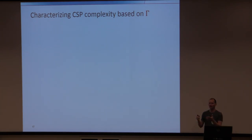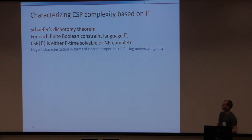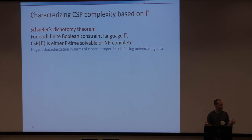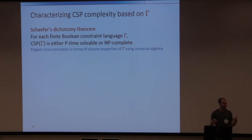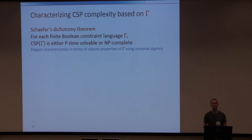Now that we understand how a constraint language tells us what constraints to write, we can characterize CSP complexity based on the language. An early foundational result is Schaefer's Dichotomy Theorem: for any finite set of Boolean relations forming a constraint language, either the CSP is polynomial-time solvable or it's NP-complete, with a nice characterization in terms of closure properties of the satisfying assignments — expressed in the language of universal algebra and polymorphisms.